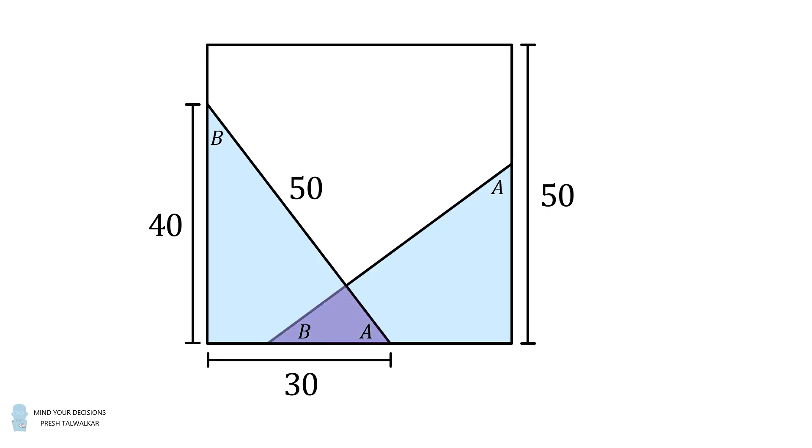So now let's focus on this overlapping triangle. Notice that it's also a right triangle with angles equal to a and b. Therefore, this purple triangle is similar to the blue triangle. Furthermore, we can figure out the length of its hypotenuse.